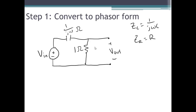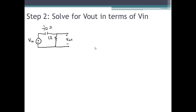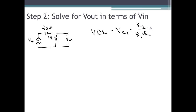Now that we have the phasor form of the circuit, we can solve for V_out in terms of V_in. We're going to use the voltage divider rule, which says that for two impedances in series, the voltage across one element equals the impedance of that element divided by the equivalent impedance of the two elements in series, times the source voltage.